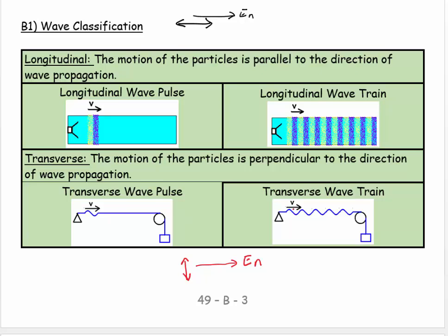Then there's the transverse wave train where the energy keeps moving continuously. I have to be careful with these diagrams because showing a termination means eventually the energy would bounce back and cause what's called standing waves — we're not there yet; I'm assuming the energy hasn't reached the end yet. In these four cases I'd like you to be able to draw the diagram given the name, or name the type of wave characterization given the diagram.